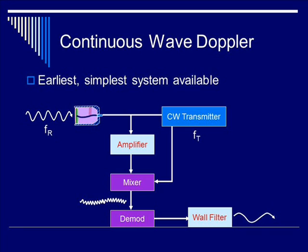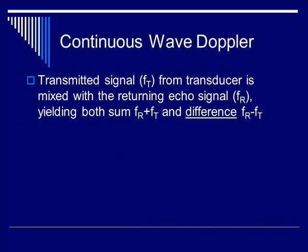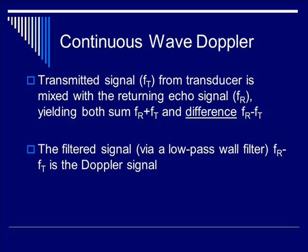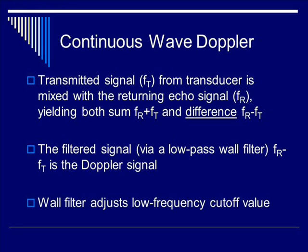In review, you have the transmitted frequency and the received frequency multiplied together, giving both the sum and the difference of the two. The demodulator gives you only the difference. The transmitted signal f(t) from the transducer is mixed with the returning echo signal f(r), yielding both sum and difference. The filtered signal via the low-pass wall filter — f(r) minus f(t) — is the Doppler signal. The wall filter adjusts this low-frequency cutoff value.